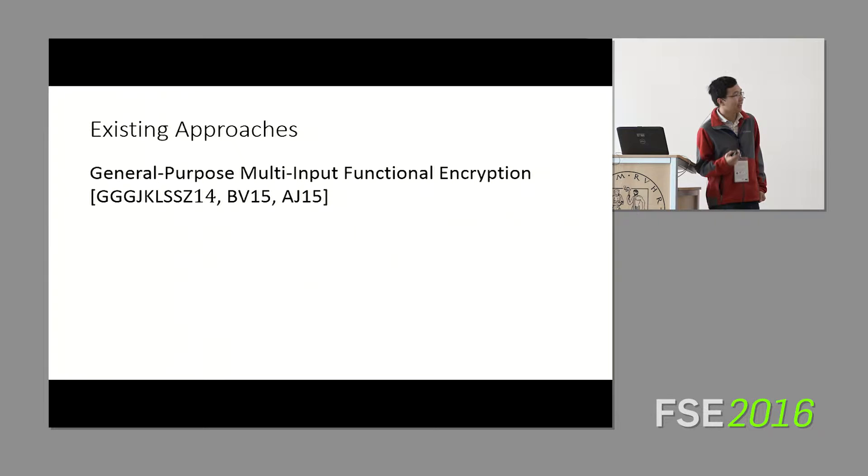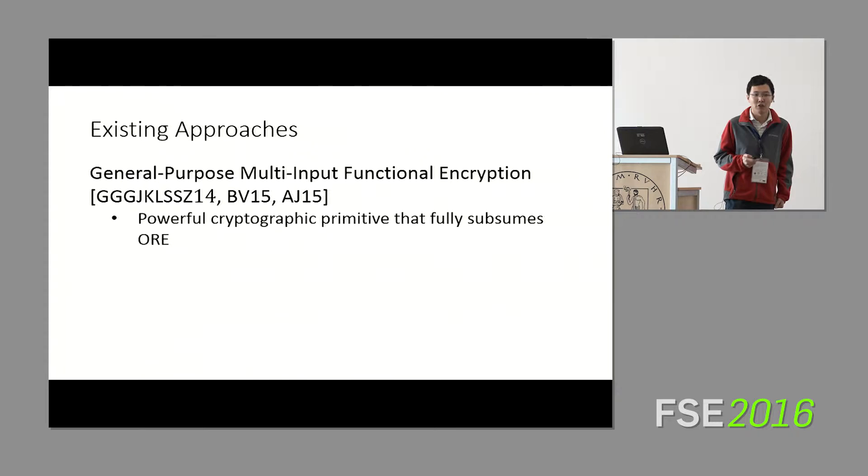Before I get to our construction, I'll talk a little bit about existing approaches for constructing order-revealing encryption schemes. So on one end of the spectrum, we have this general primitive called general-purpose multi-input functional encryption, which is quite a mouthful. I'm not going to go into the details of it in this talk. But basically, this is a powerful new cryptographic primitive recently developed in the last two years that fully subsumes order-revealing encryption. Order-revealing encryption can be viewed as a special case of this super powerful cryptographic primitive. Not surprisingly, this also achieves best possible semantic security under the security notion I just described.